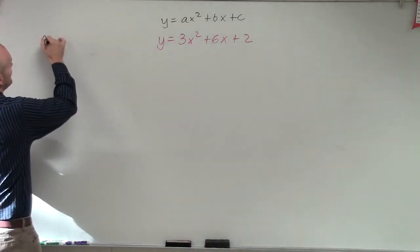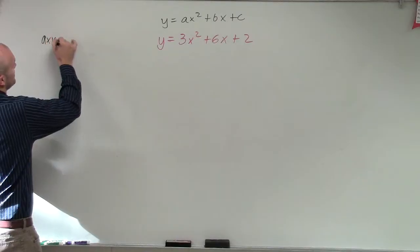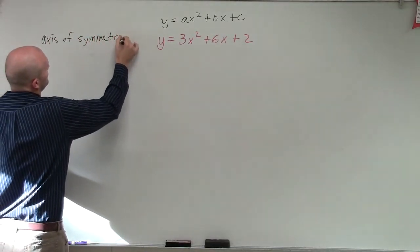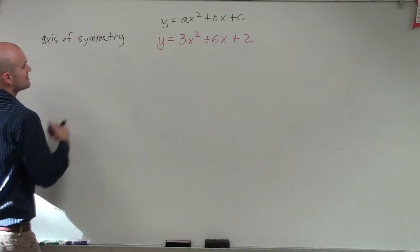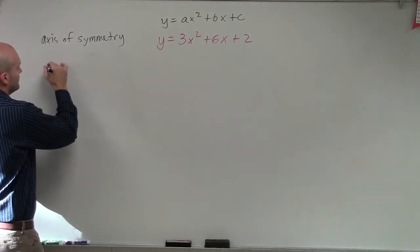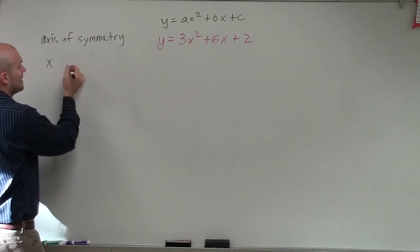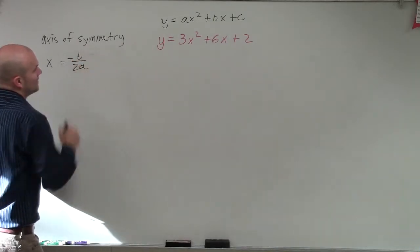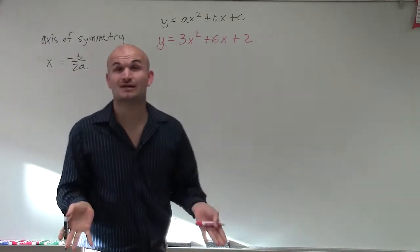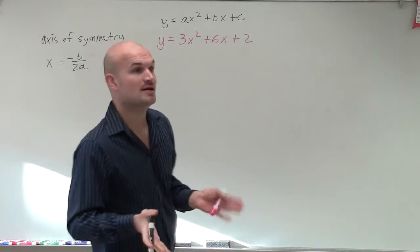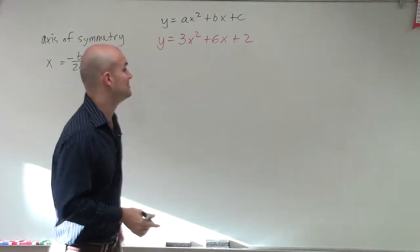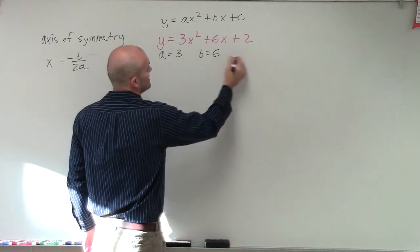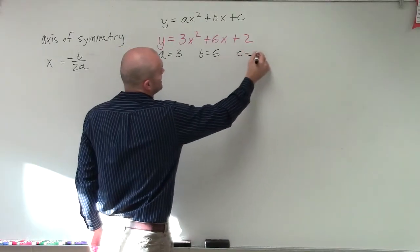The first thing I want to do is find the axis of symmetry. The formula for axis of symmetry is x equals negative b divided by 2a — it's a vertical line. One thing I like to do is always label my a, b, and c. So a equals 3, b equals 6, and c equals 2.